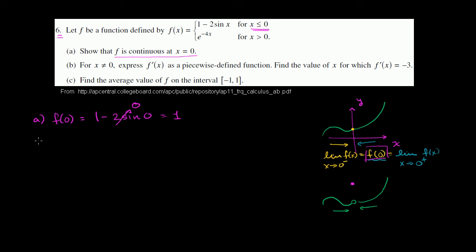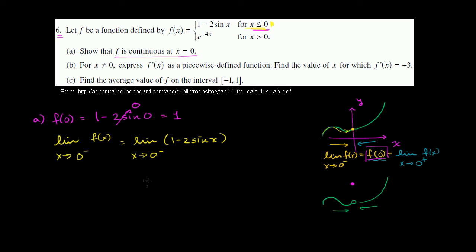Now let's think about the limit as x approaches 0 from the left-hand side of f of x. As we approach 0 from the left, we're dealing with values of x less than 0, so we use the first case: the limit as x approaches 0 from the left of 1 minus 2 sine of x. Since sine of x is a continuous function, this equals 1 minus 2 sine of 0, which equals 1.